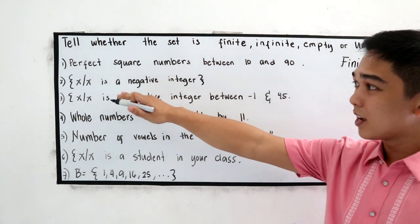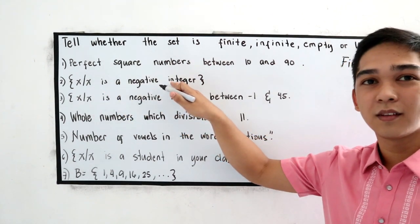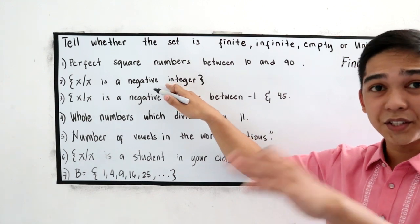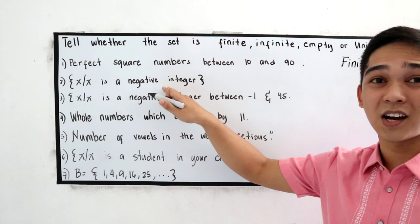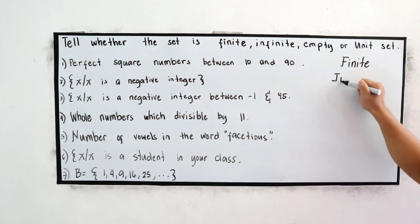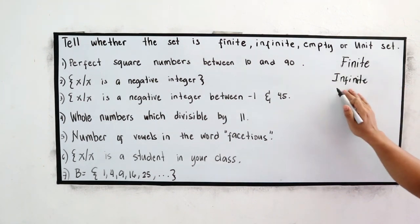Next, number two. X such that x is a negative integer. Can we count those numbers, negative integer? Negative numbers are infinite numbers. So, this is infinite. Number two is infinite.